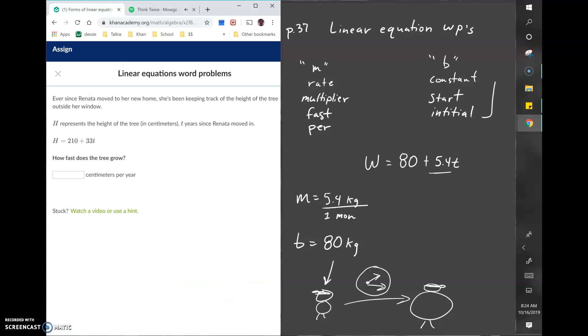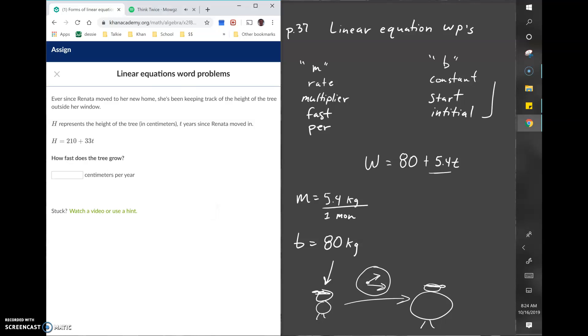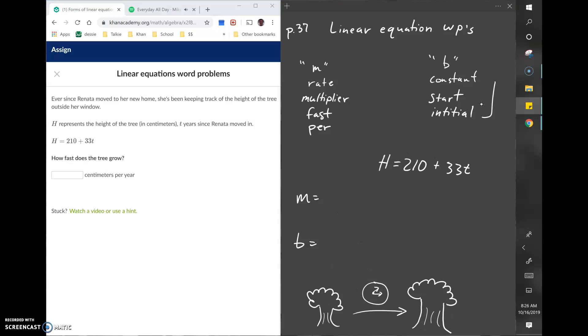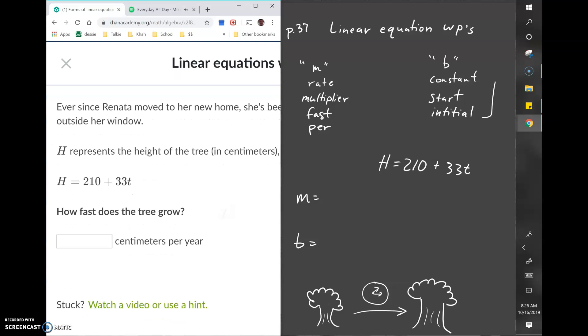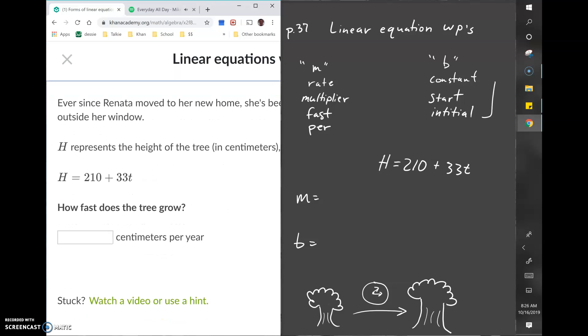Pause the video and read through the problem. See if you can identify what the M and B values are and gain some context. Hopefully you deduced that this problem was about Renata measuring her tree that was outside her window when she first moved in. The tree is growing.